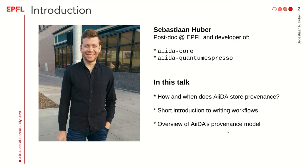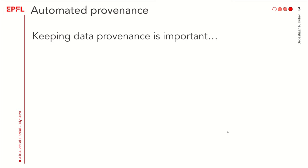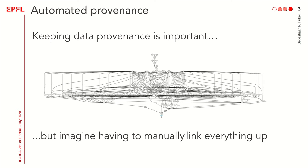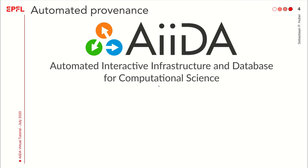One of the core pillars of AIDA is automated provenance because we think keeping data provenance is important. But if we look at even a simple provenance graph of a workflow — where this is the computed property of a single material and you see all the data provenance that comes before it — imagine having to manually store and link everything. This would be, even for this simple case, a humongous task, never mind running this in high throughput. So we need something that automates this for us, and that's exactly what AIDA promises. It's automated not just with respect to running your workflows, but in the sense that it will automatically store the provenance of anything that you run.